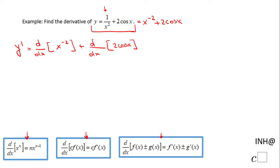And then on my next step, I'm going to use here the power rule. So I'm going to have here negative 2 x to the negative 2 minus 1. Let me write it like that.